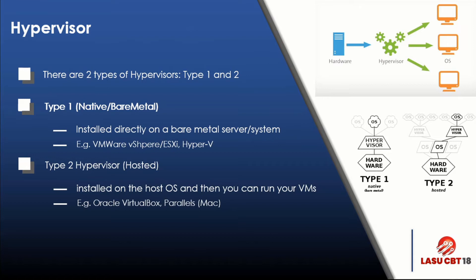The key difference: with a Type 1 hypervisor, the VM communicates directly on the bare metal — the VM is created on the hypervisor itself. With a Type 2 hypervisor, it's installed on the host operating system, so the VM sits on top of the host OS rather than directly on the hypervisor. Good examples of Type 2 include Oracle VirtualBox and Parallels for Mac.